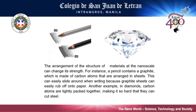The arrangement of the structure of materials at the nanoscale can change its strength. The structure of a material at the nanoscale can dramatically change how it behaves. For example, pencils contain graphite, which is made up of carbon atoms arranged in sheets that can easily slide around. It's easy to write with a pencil because the graphite sheets easily rub off onto paper. Carbon atoms, however, also make up some of the world's strongest materials, such as diamonds. In diamonds, carbon atoms are tightly packed together, making them so hard that they can cut steel.